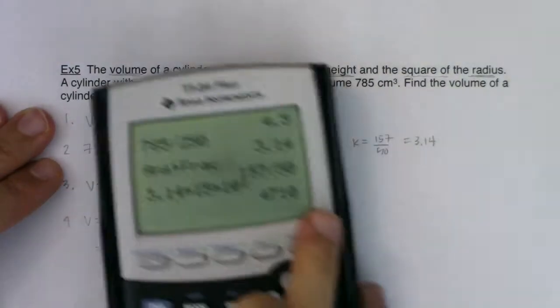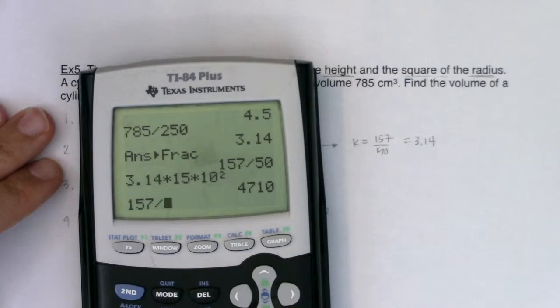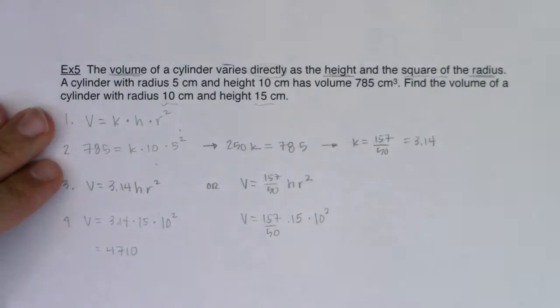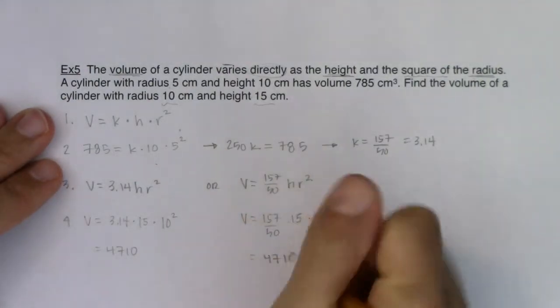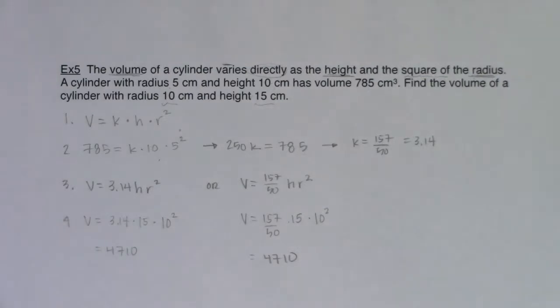If I do it this way, if we do 157 divided by 50 times 15 times 10 squared, we are getting 4710. Now this is all fine and good, but if you give me this answer as is, if you just write 4710, I'm going to dock you a bit.